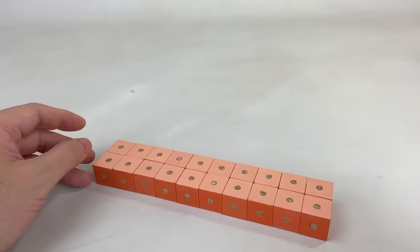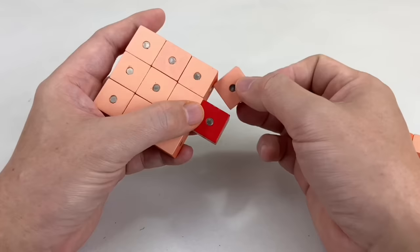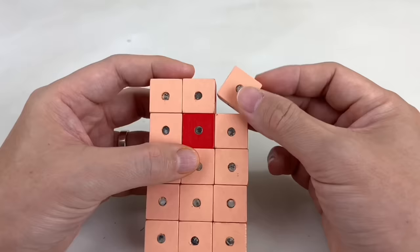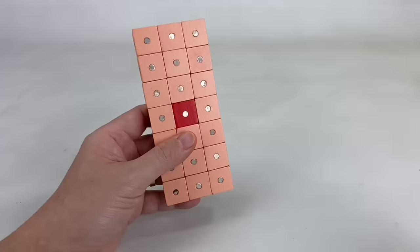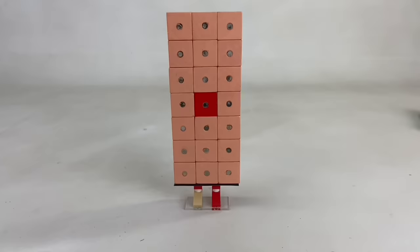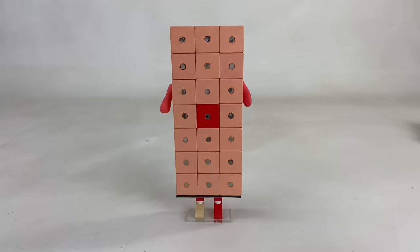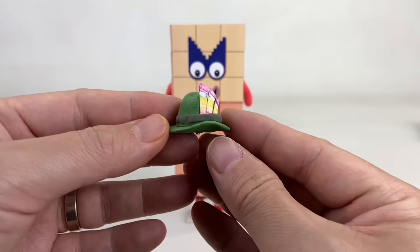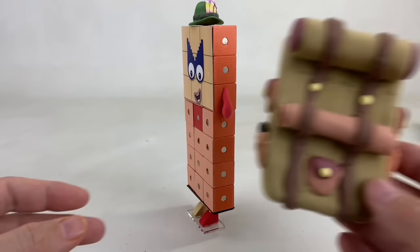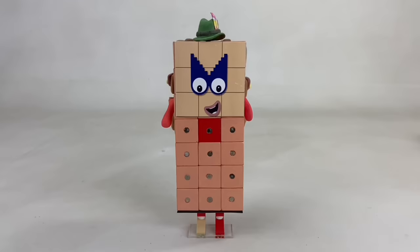Now let's build Number Block 21. 21 is made up of 20 light orange blocks and one red block. 21 is a number explorer, which means that she loves discovering new numbers. Now let's put her legs made of lego bricks, arms, and face. And because she's a number explorer, let's not forget her explorer's hat with three rainbow feathers, because she's three times seven of course. Her camping luggage, which we made out of air dry clay, and her walking stick made of lego bricks.